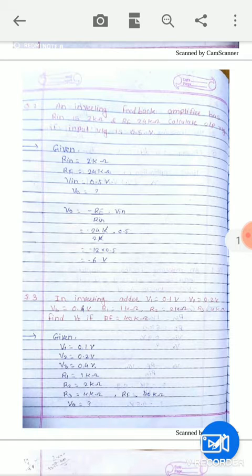First given terms: Rin is 2 kOhm, RF is 24 kOhm, and Vin is 0.5 volt. Vo output equation. Inverting amplifier: minus RF upon Rin into Vin. Value substitute: 24 kOhm, 2 kOhm, k k cancel. Answer will be minus 12, 0.5, minus 6 volts.